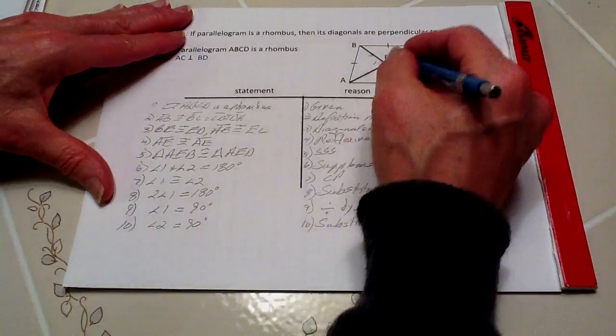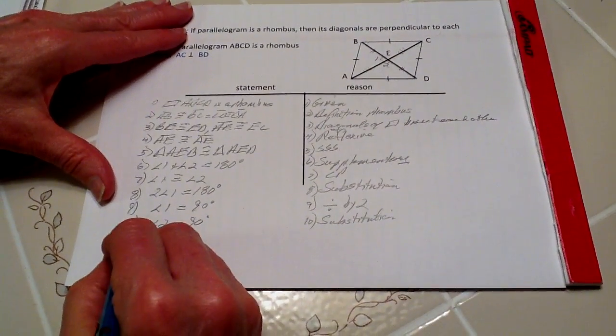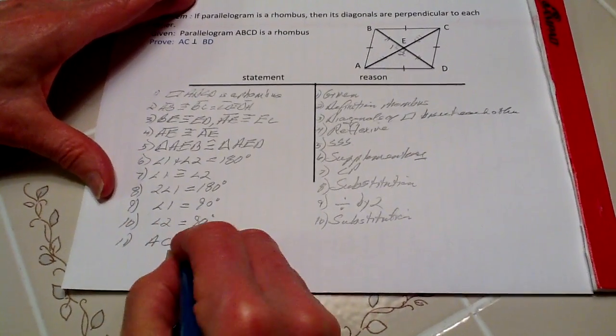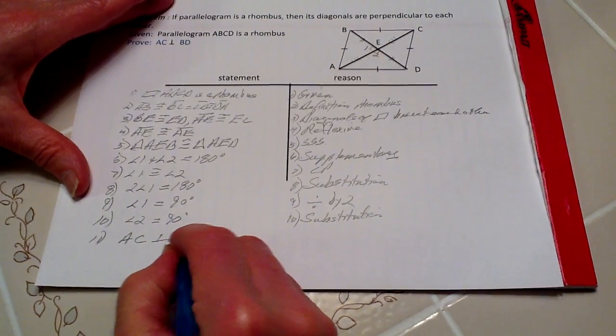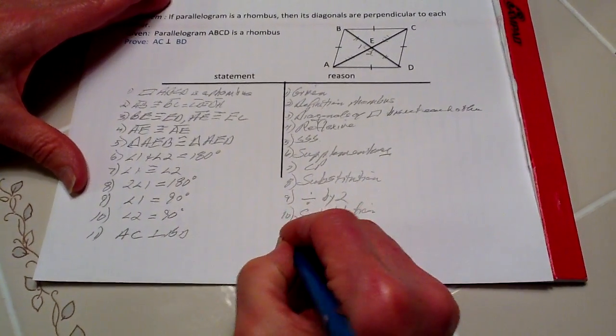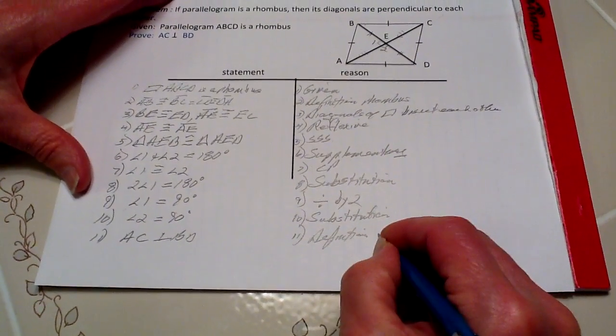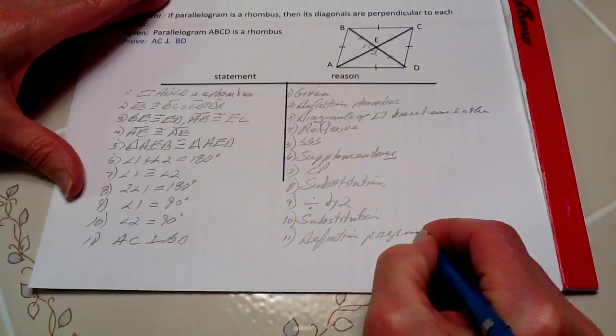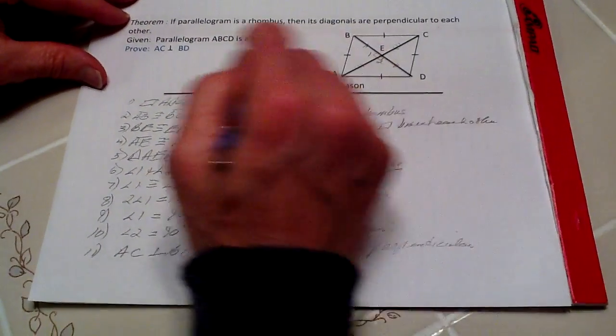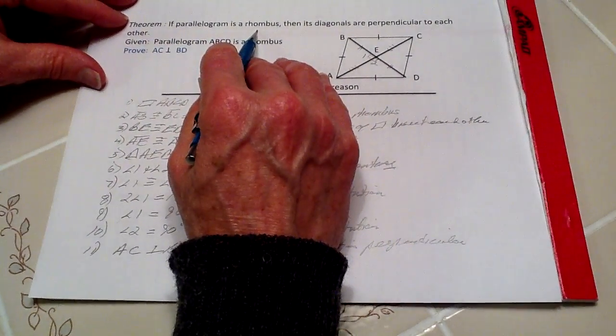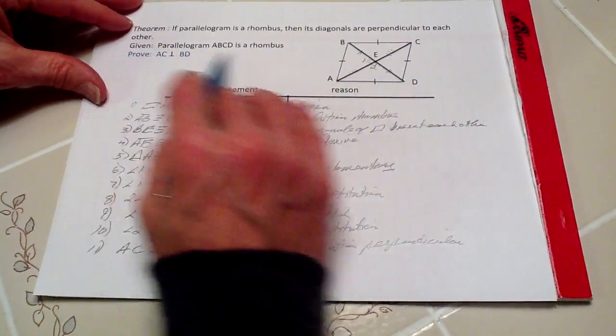So if both of these angles are 90 degrees, then by definition, step eleven, AC is perpendicular to BD. That's by definition of perpendicular. We have now therefore proven that if a parallelogram is a rhombus, then its diagonals are perpendicular to each other.